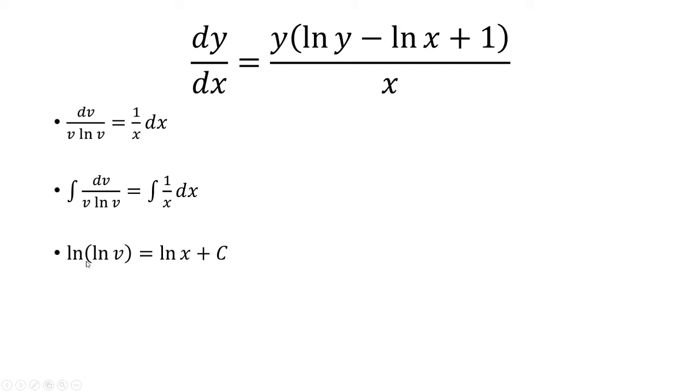I want to get v by itself, so I have to undo the natural log. So I'm going to raise, I'm actually going to have e to both sides. So it's like e to the ln of ln of v is equal to e to ln of x plus c.